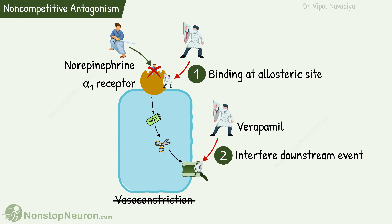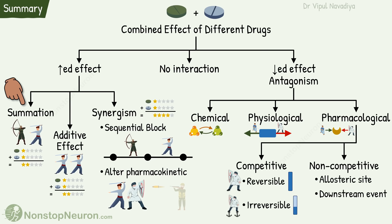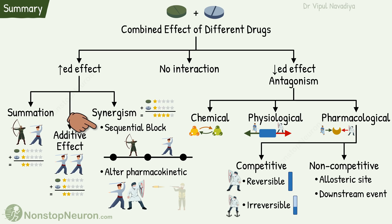So these were all the effects of combining drugs. In summation, two drugs act by different mechanisms and the combined effect equals the sum of individual effects. In additive effect, both drugs act by the same mechanism and the combined effect is the sum of individual effects. In synergism, the combined effect is more than the sum — achieved by sequential block, where two drugs act on different steps of the same biochemical pathway, or by one drug altering the pharmacokinetic profile of the other.